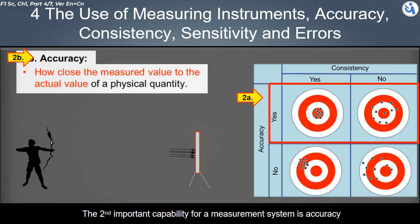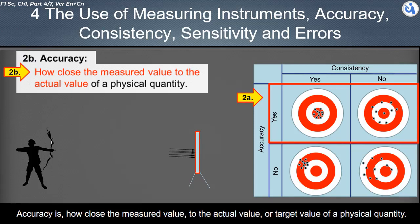The second important capability for a measurement system is accuracy. Accuracy is how close the measured value to the actual value or target value of a physical quantity.